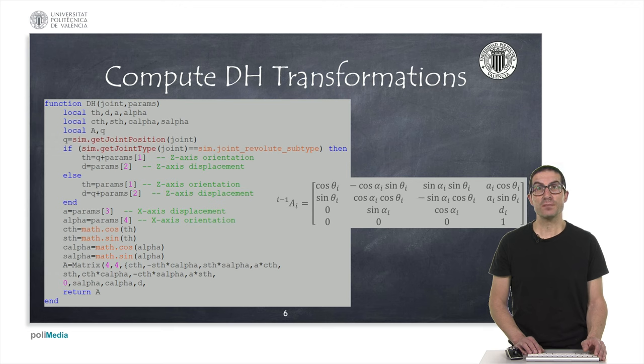As you can see, this function first obtains the joint value position using the getJointPosition function, and also the joint type using the getJointType function, which allow us to discriminate between revolute and prismatic joints. Then, it computes the Denavit-Hartenberg transformation matrix and returns this matrix as an output argument.